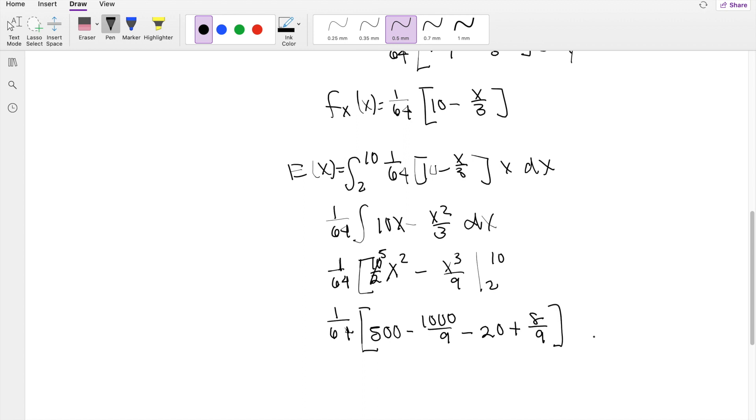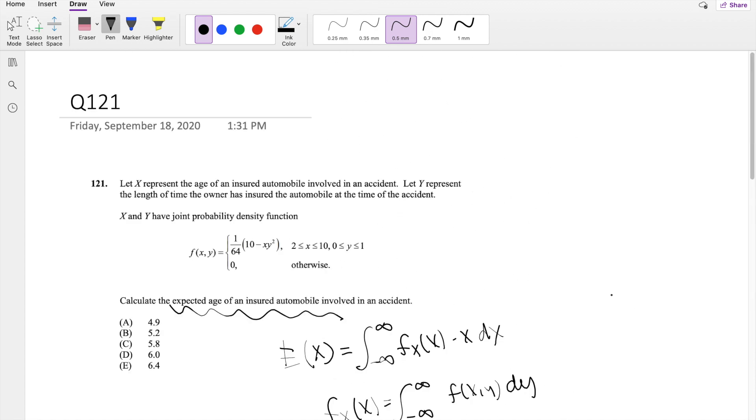When you're on the exam, you want to try to do as much of it by hand so you don't have to type as much into the calculator. But plugging this into the calculator, you get approximately equal to 5.777 repeating, which is approximately equal to 5.8, our answer C.